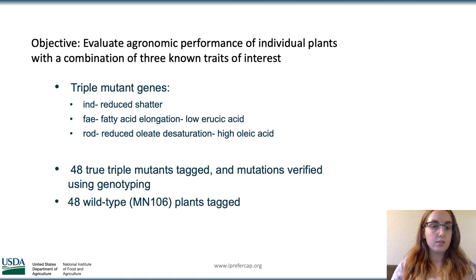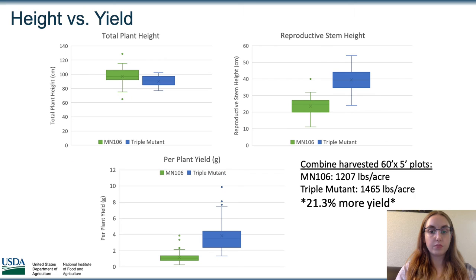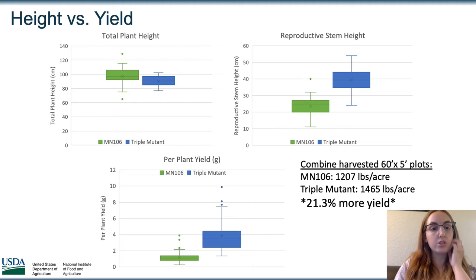Those three genes carry traits that are desirable for the domestication of pennycress. To identify the plants, we first tagged 48 individual plants within the triple mutant group, and then we also tagged 48 of the wild type, which was the MN 106 plants. Looking at the phenotyping data, the slide shows the heights and yields of the triple mutants and the MN 106, which was the control in this experiment.